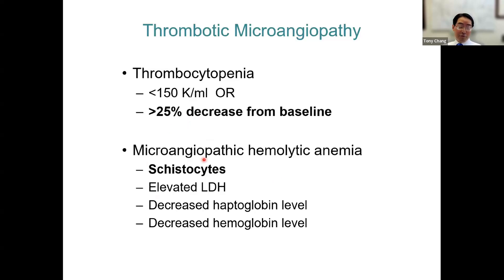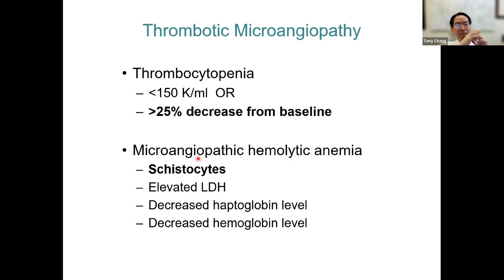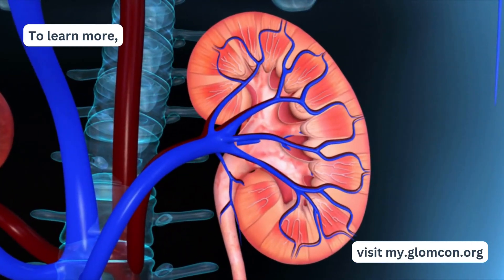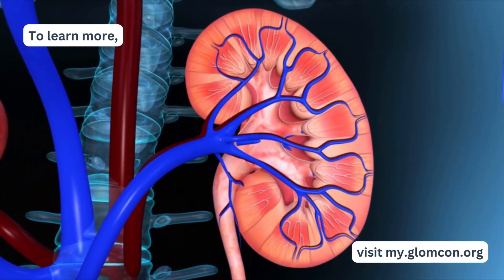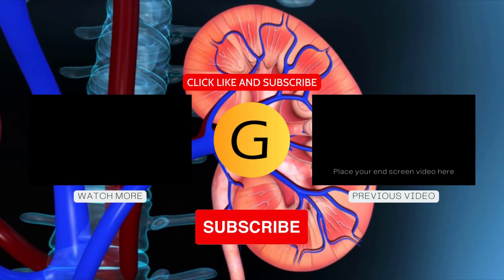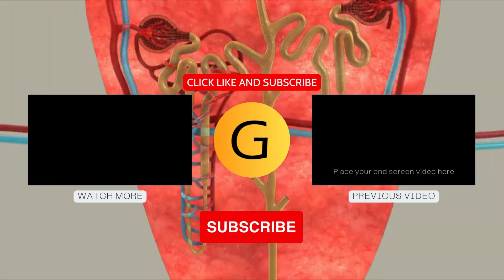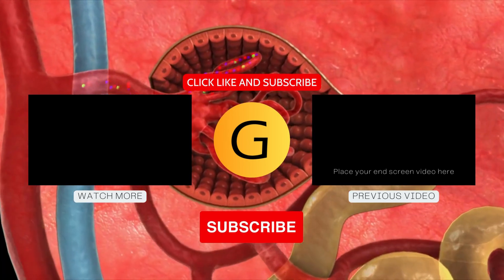The other thing is that we love schistocytes. If schistocytes are present, that's great. But if they're absent, you can't use that to rule out a TMA. We see this pitfall all the time where people say there are no schistocytes and we'll see them.